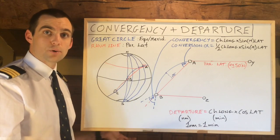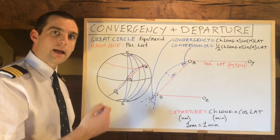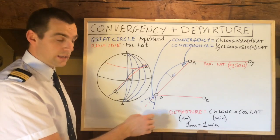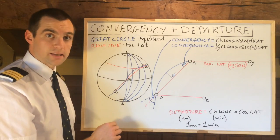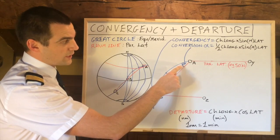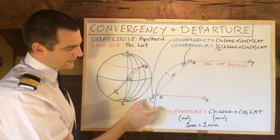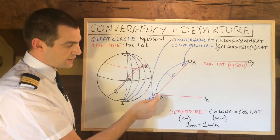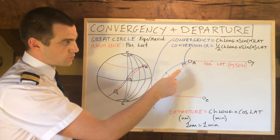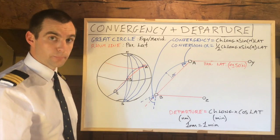Feel free to pause the video and go back to listen to the description again until you understand it. So that's the conversion angle, and convergency is the total angular difference between point A and point B.